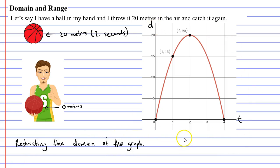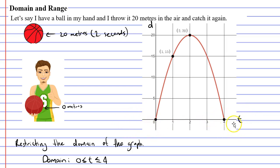If someone was to ask you what the domain of your graph is, you would simply state that the domain is the set of t values such that t is greater than or equal to 0 and less than or equal to 4. Essentially we are only picking t values between 0 and 4. We ignore all values less than 0 and all values greater than 4, otherwise we'd have arrows coming down on each side which make no sense in context.